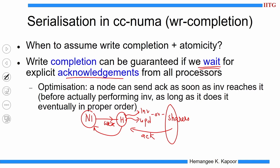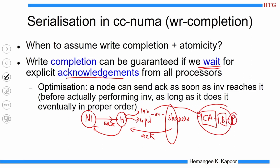This will take time because invalidations or updates travel through the big network to reach all processors, go through the cache hierarchy, and appropriate actions are taken. As an optimization, a node can immediately send an acknowledgement as soon as an invalidation (INV) reaches its communication assist (CA), as long as it guarantees it will invalidate the block in the proper order. So we can commit the invalidation upon reaching the CA rather than waiting for it to propagate through the full cache hierarchy.